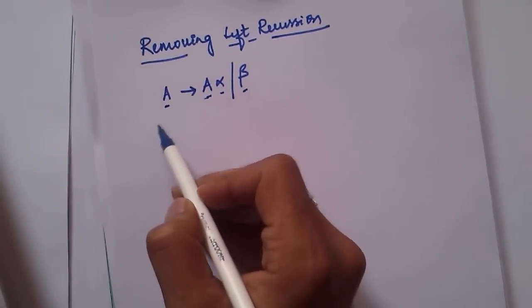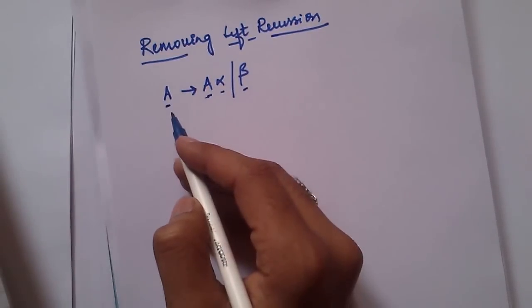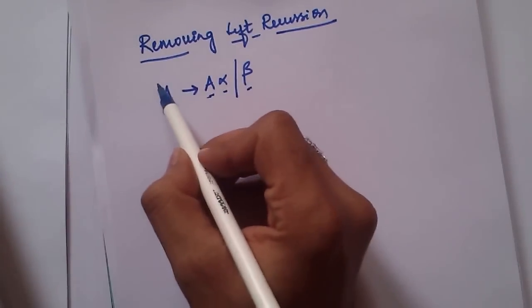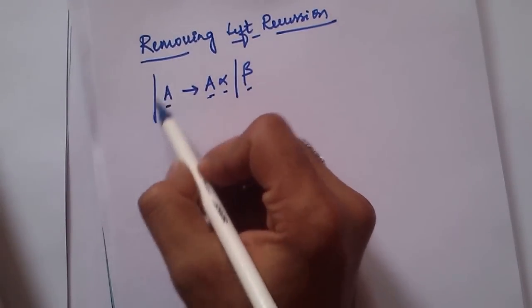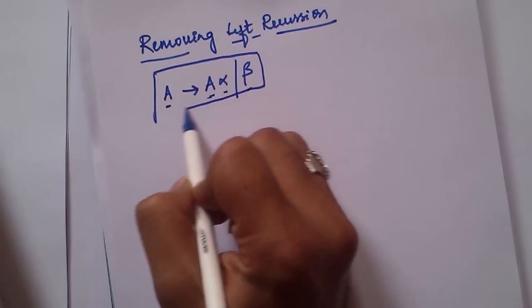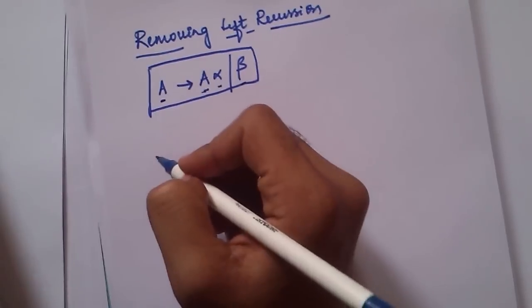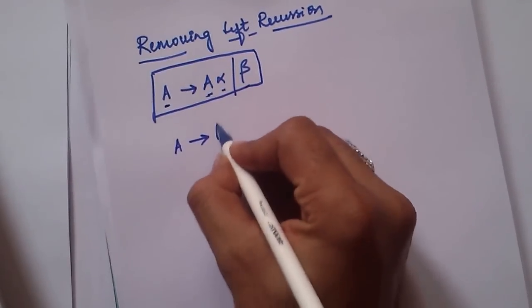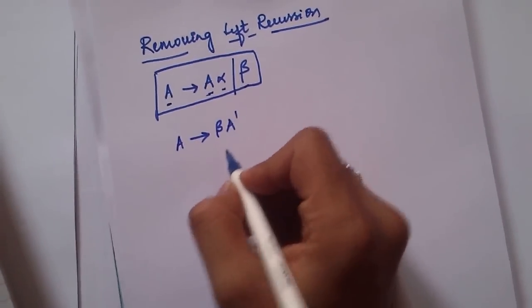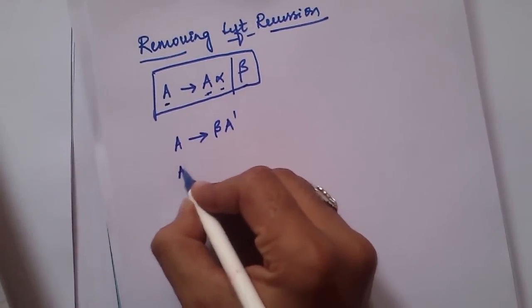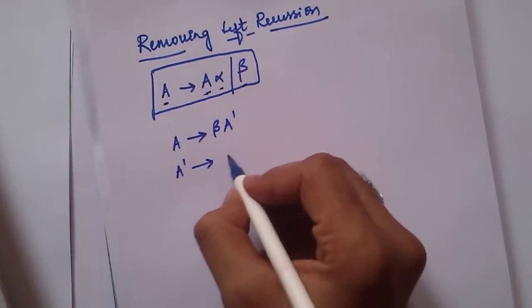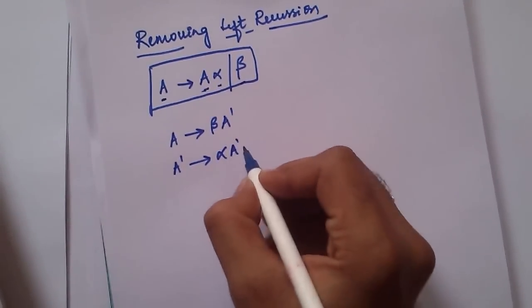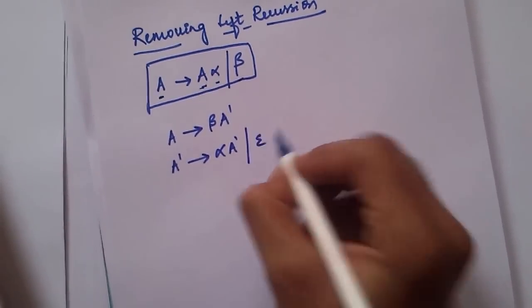So then, if we get a production which is like this, we are going to change it to: A → βA' and A' → αA' | ε.